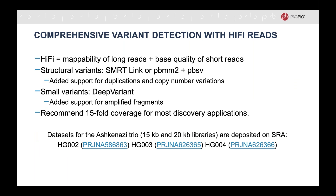In conclusion, HiFi reads combine the mappability of long reads with the base quality of short reads, allowing for comprehensive variant detection. For structural variants, we recommend using SmartLink or PBSV from the command line. For small variants, we recommend using DeepVariant, which has added support for amplified fragments. We currently recommend 15-fold coverage for most discovery applications. If you want to get started with HiFi data, 15 and 20 KB libraries are deposited on SRA under three BioProject numbers.